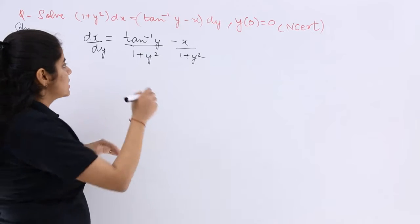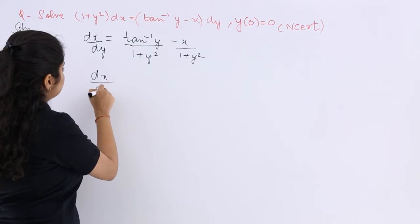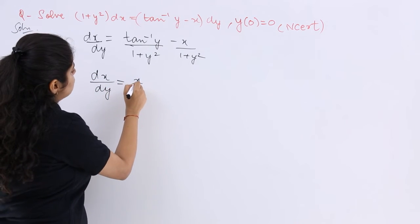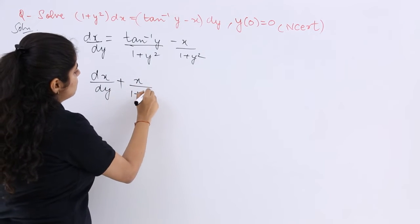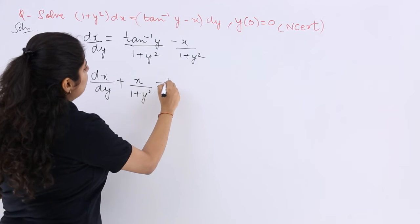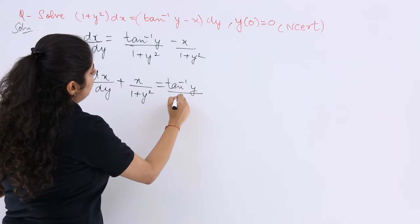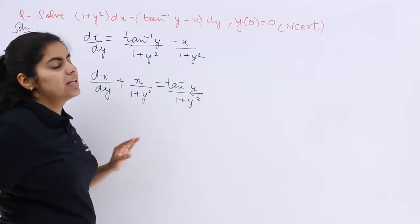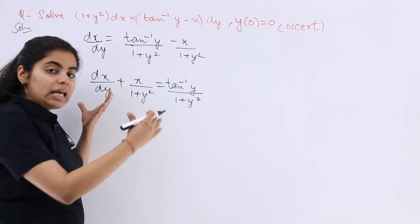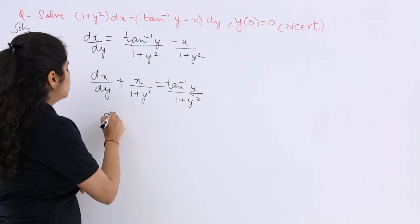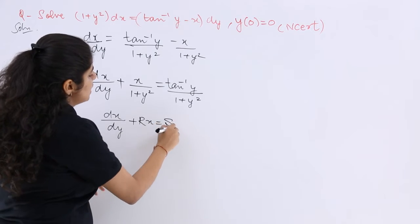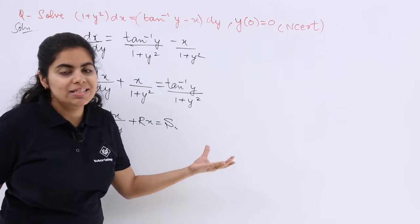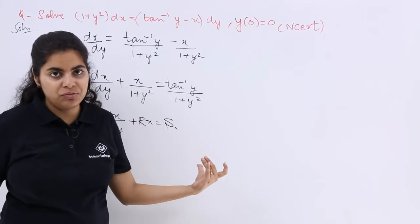This is of negative factor, so let's rearrange it to become positive. So dx/dy plus x/(1 + y²) is equal to tan⁻¹y/(1 + y²). Now, is this not comparable with the general form dx/dy + Rx = S, where R and S are either constants or functions of y?